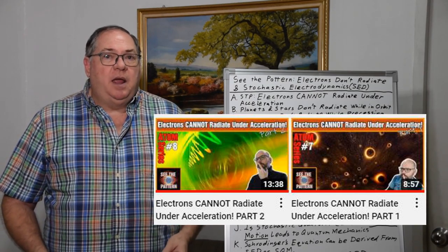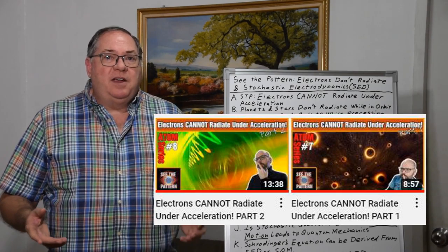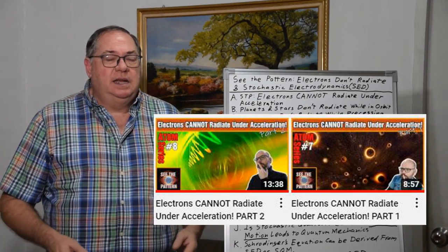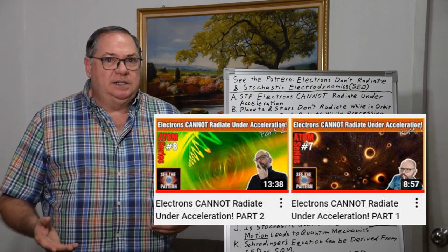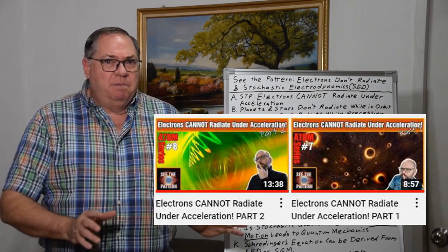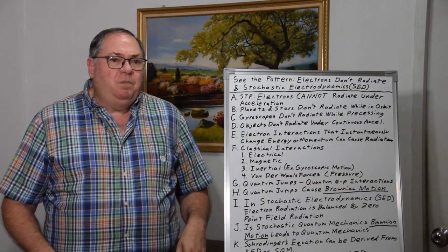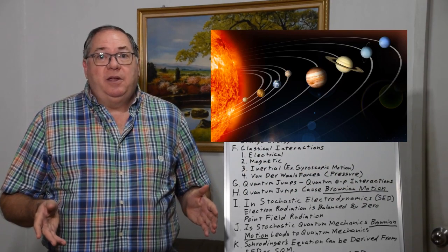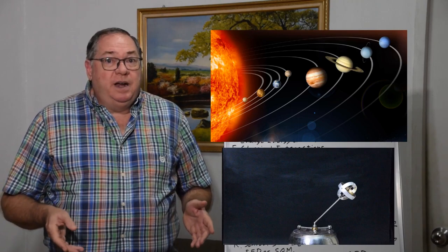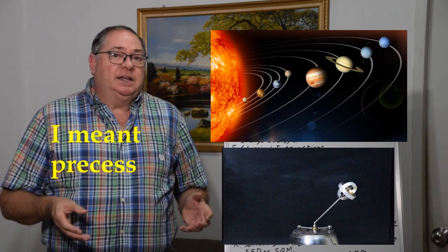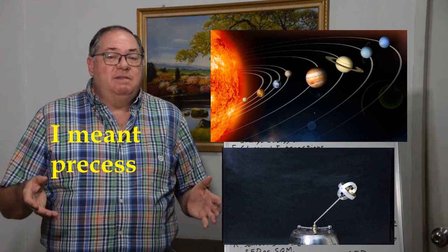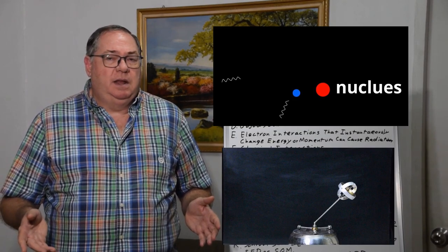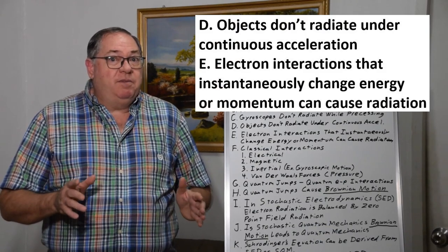I won't do my normal type of reaction video where I critique every sentence, because most of what he said is correct. I would certainly embellish things a little and do my own style, but what he said is essentially correct. We can think of it in terms of planets and stars — they don't radiate when they orbit. Gyroscopes don't radiate when they orbit. So classically, bodies don't radiate light when they orbit; they don't need photons to be emitted to change directions.